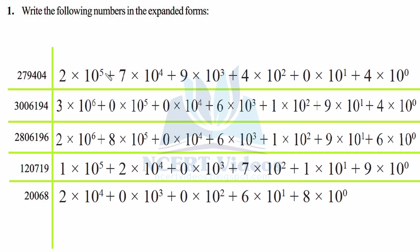We write plus because ultimately all these terms will add up to give this number. So writing 7 into 10 raised to power 4 — the power is decided from leftover digits towards the right of that number: 1, 2, 3, 4. Again we write plus, then 9 into 10 raised to power 3. Again plus, writing 4 into 10 raised to power 2. Then plus, 0 into 10 raised to power 1.